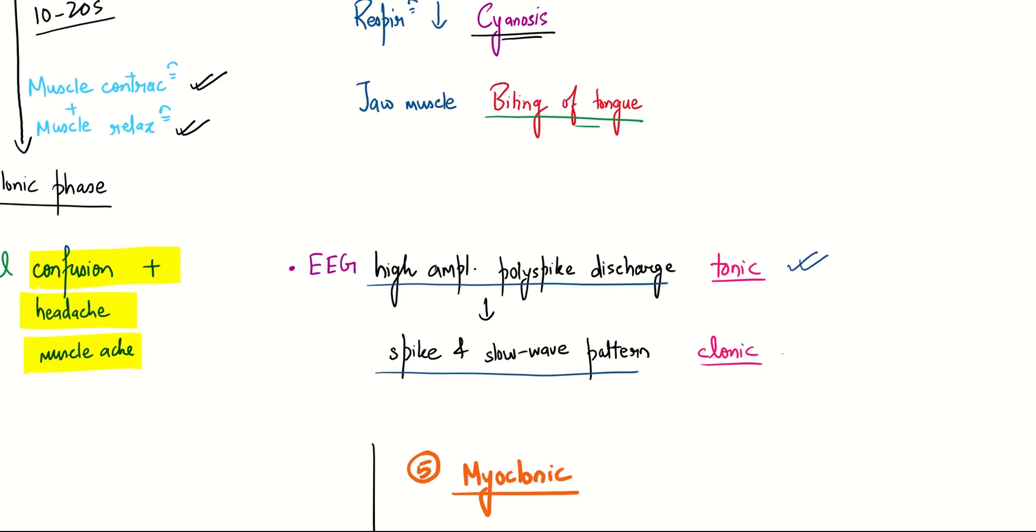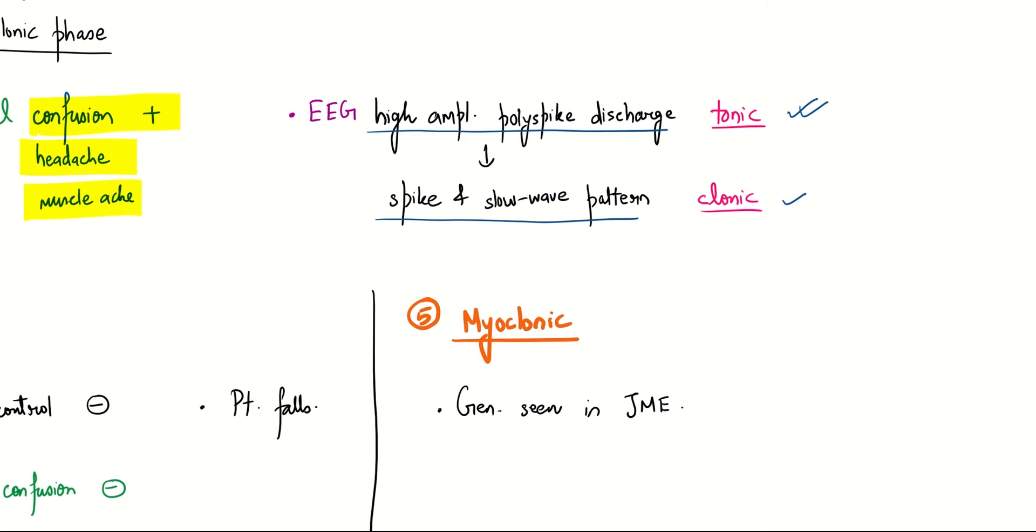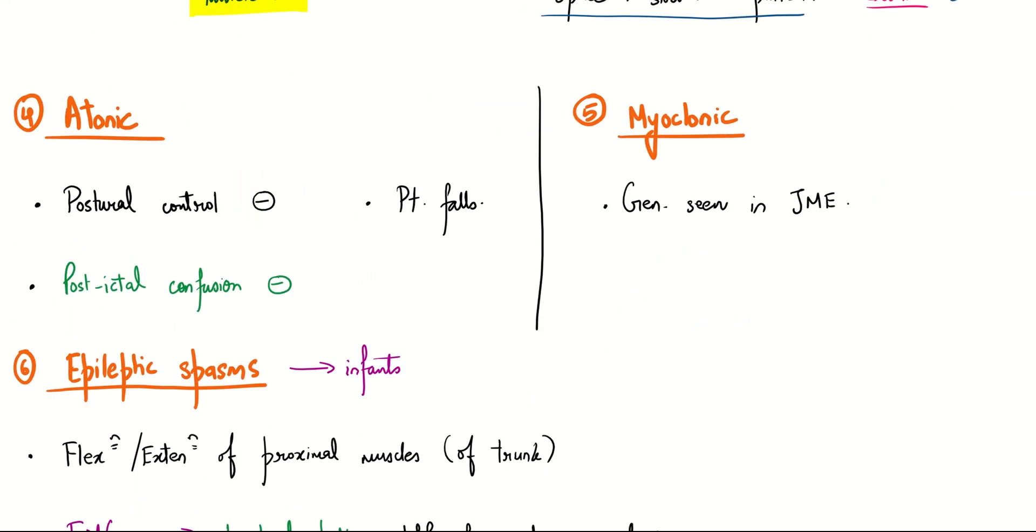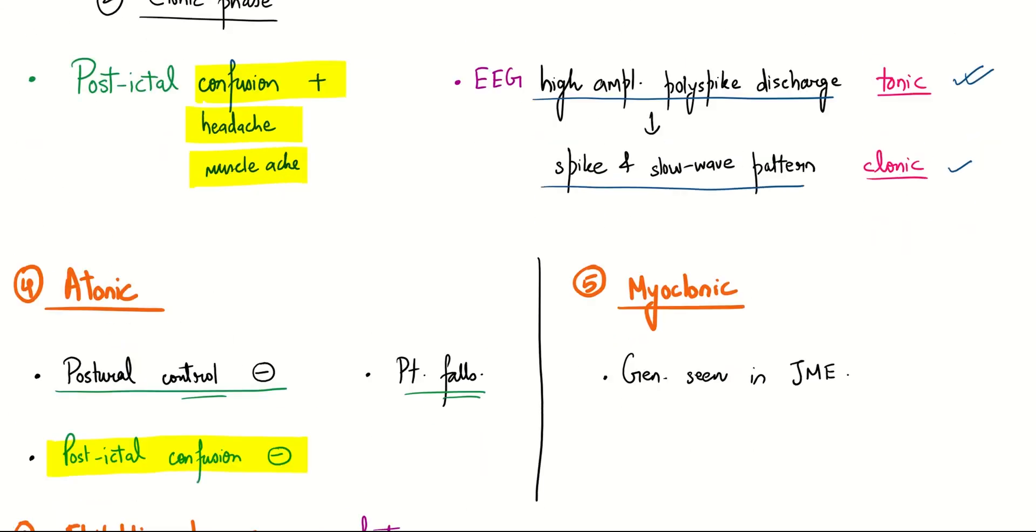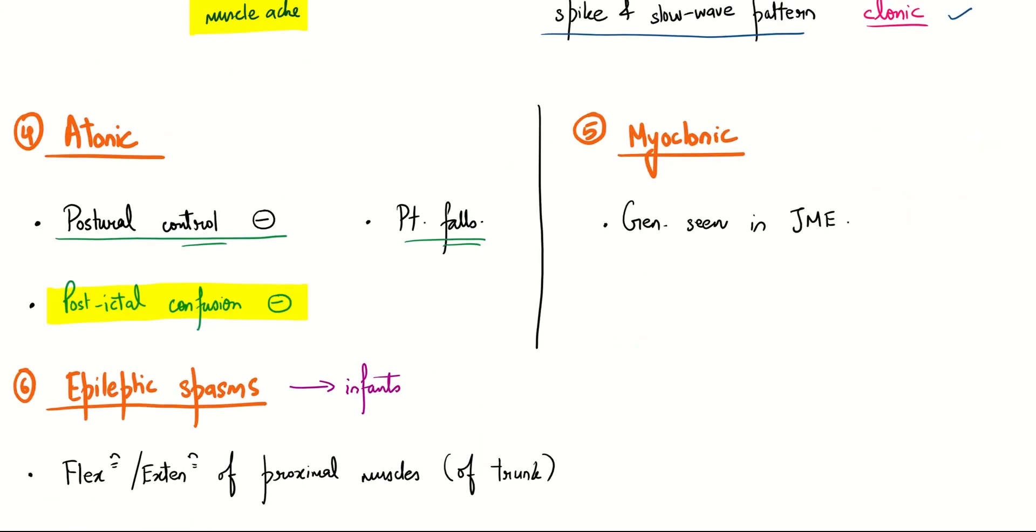In atonic seizures, atonic means no tone, so muscle tone will be lost. As a result, no postural control will be present and the patient will fall if the myoclonus is very severe. A differentiating factor is that post-ictal confusion will be absent, whereas it is present in GTCS. In myoclonic seizure, you need to know that it is seen in juvenile myoclonic epilepsy.